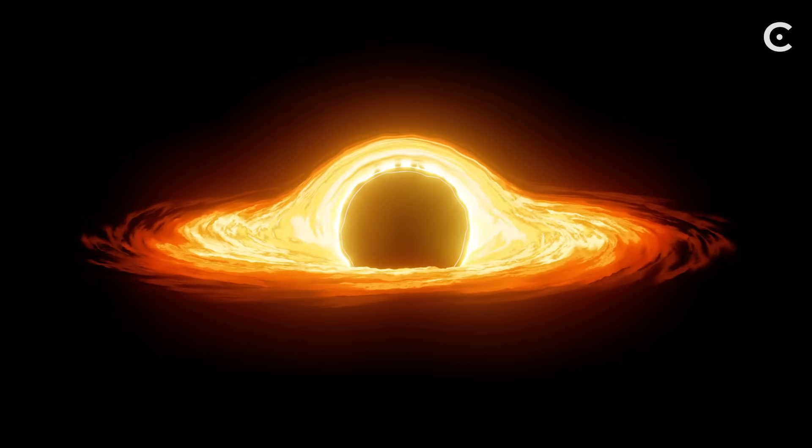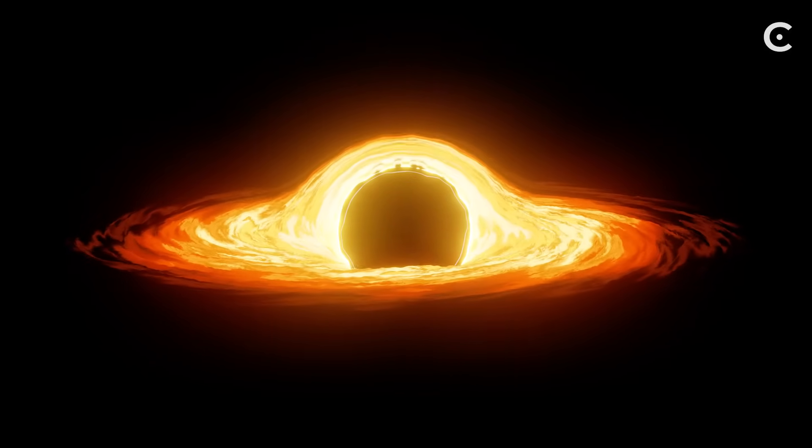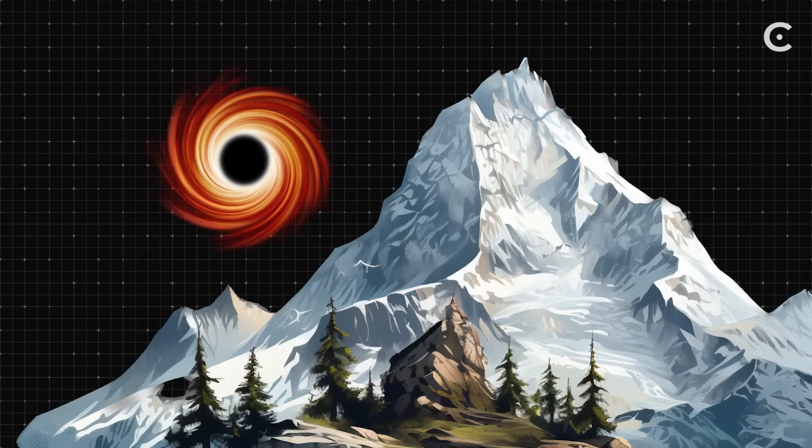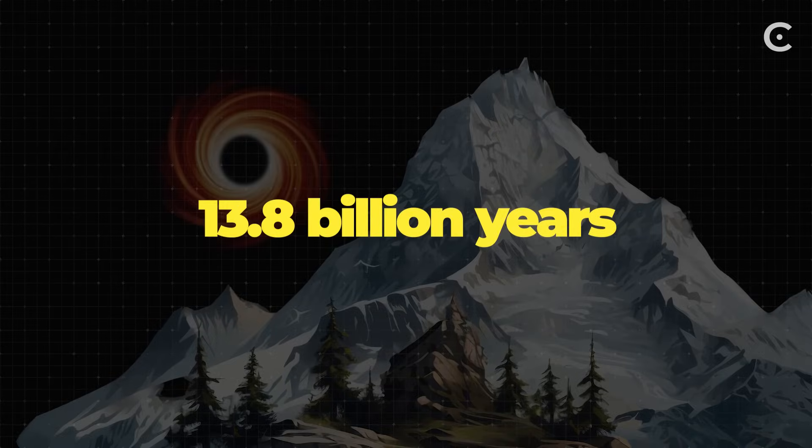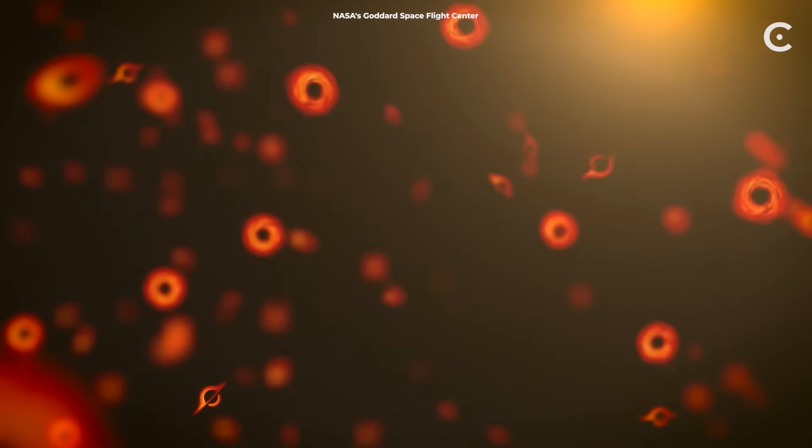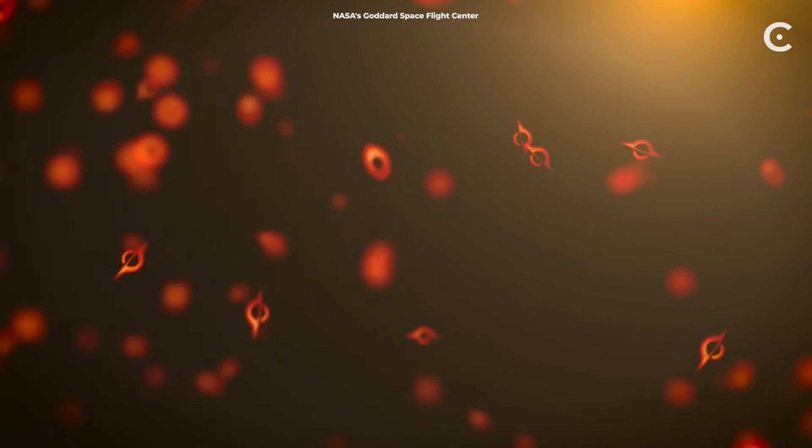But here's where it gets interesting. The smaller the black hole, the hotter it glows and the faster it evaporates. A black hole with the mass of a large mountain? That would last about 13.8 billion years. Sound familiar? These lightweight primordial black holes born in the Big Bang are reaching their expiration dates right now.